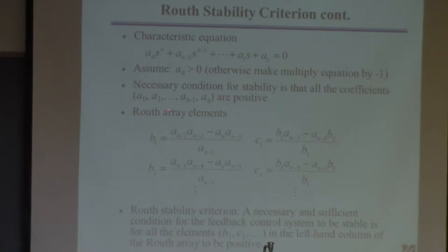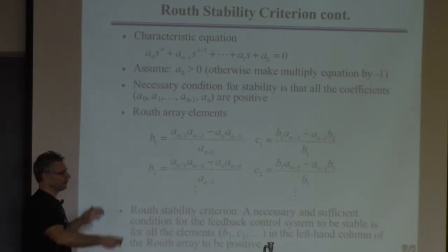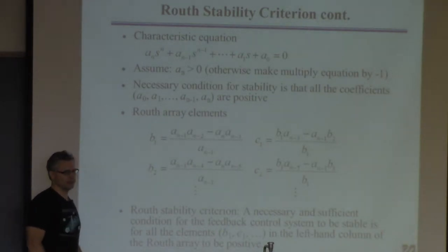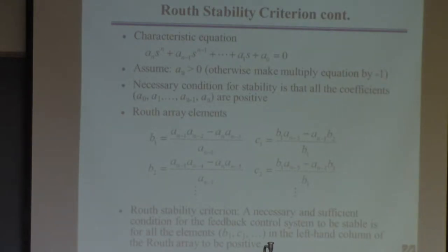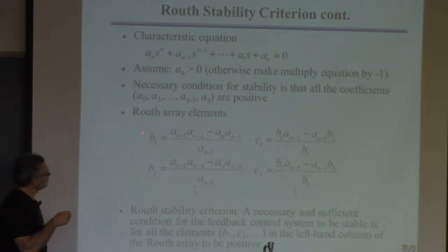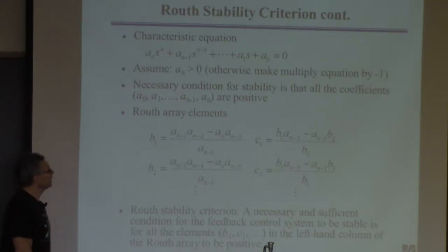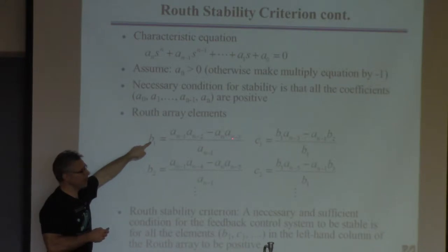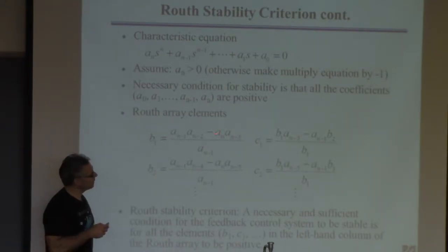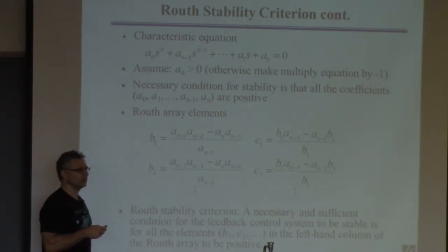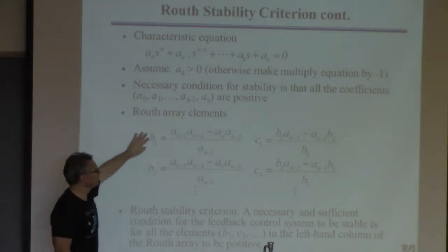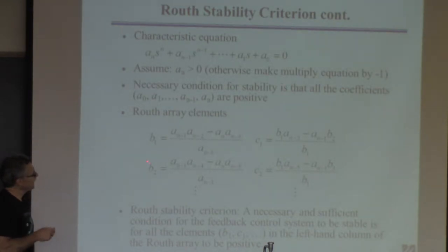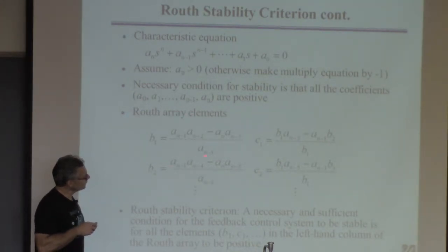Once you've done this, you calculate the so-called array elements. I don't put them in a full array like the book does, but the book forms this huge array — you only check the things in the left-hand column. So I'm just going to show you how to compute the things in the left column. You start computing coefficient B1. This depends on the coefficients of the polynomial. It doesn't make sense to compute B1 unless you have a third-order polynomial or higher. If the polynomial is fifth-order or higher, you also want to compute B2.